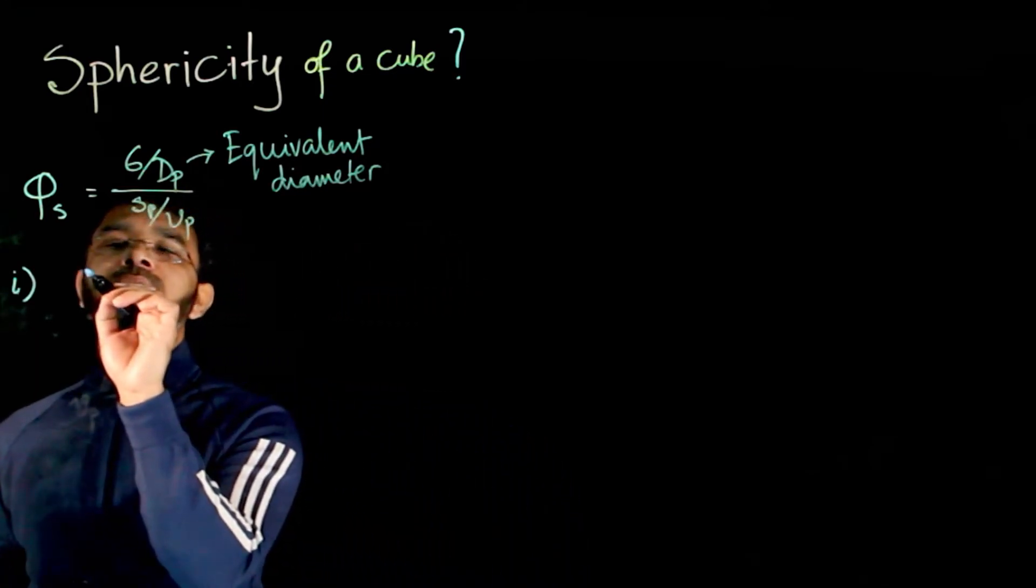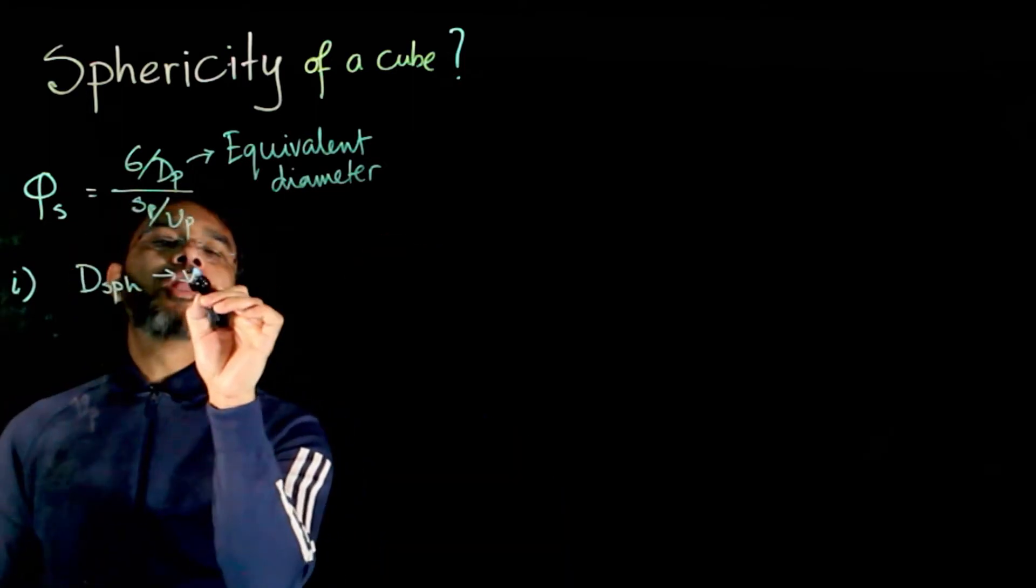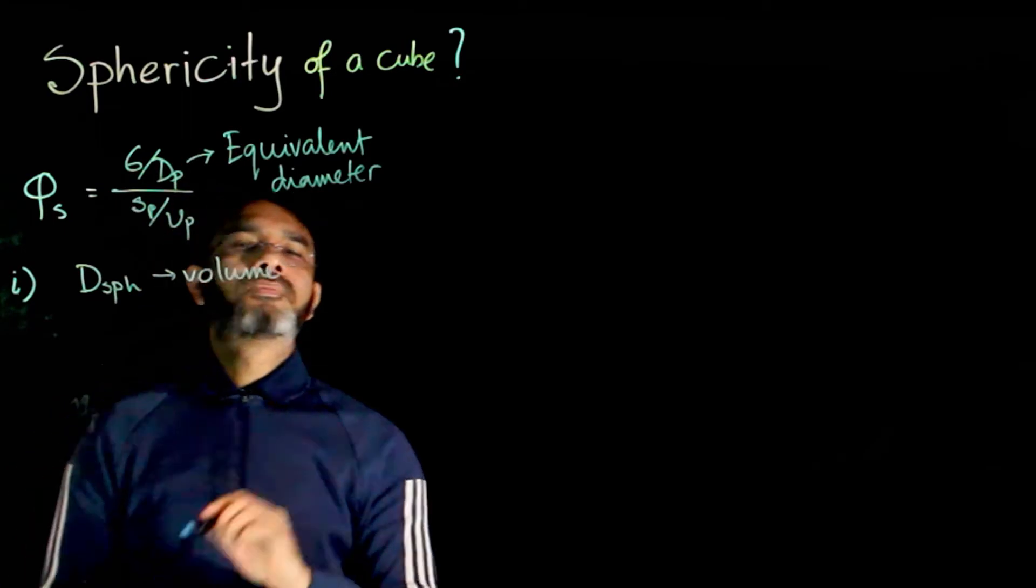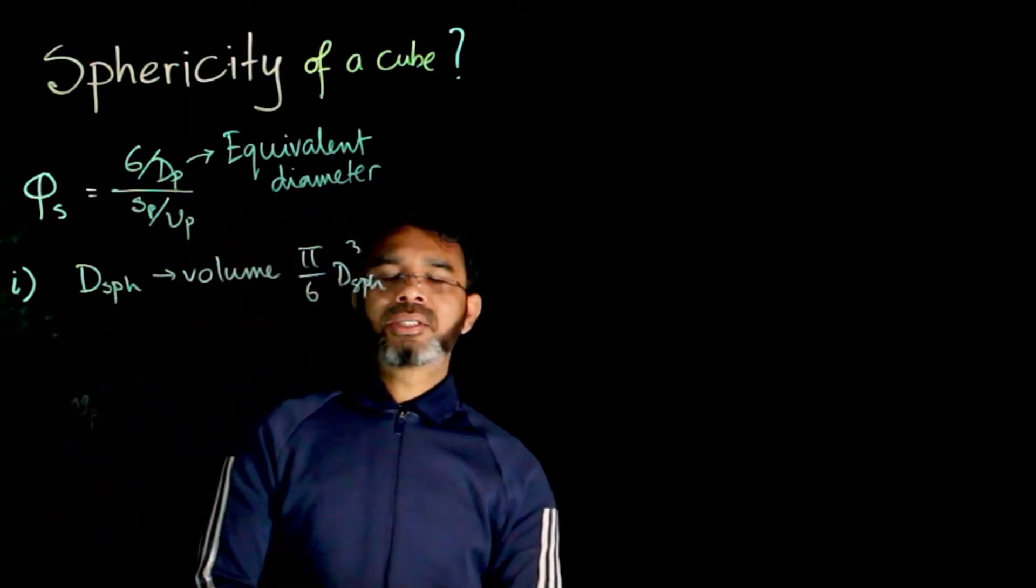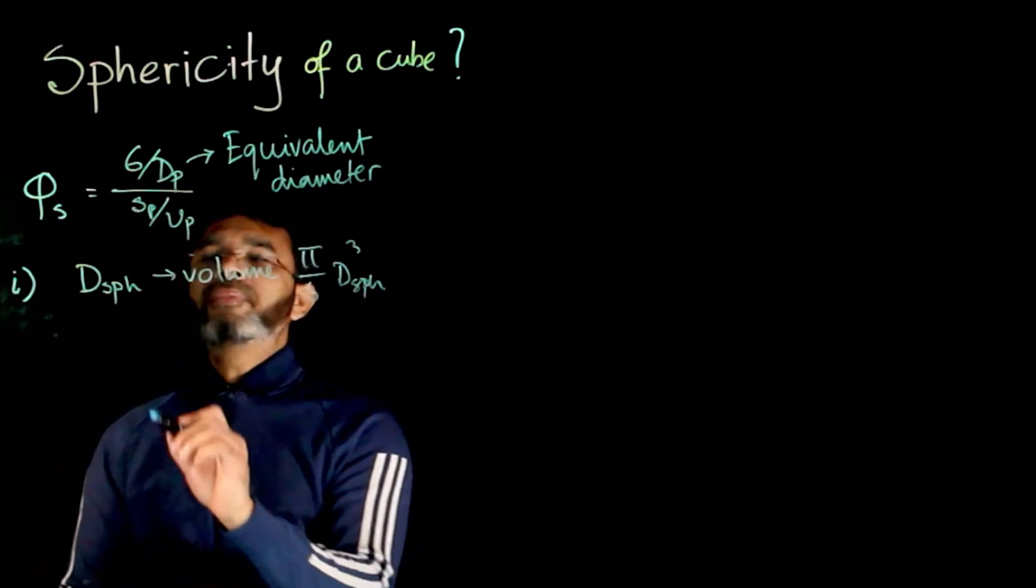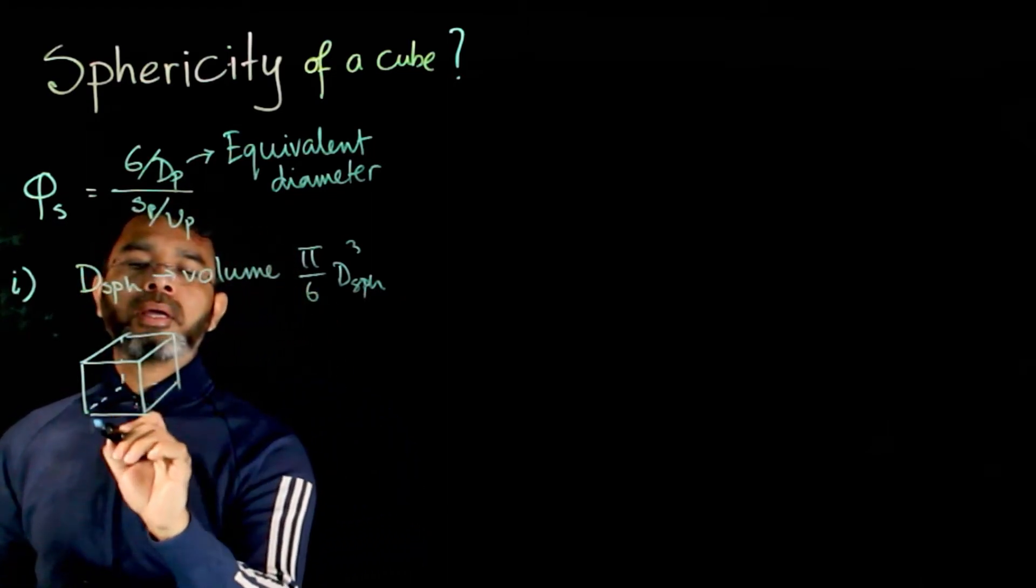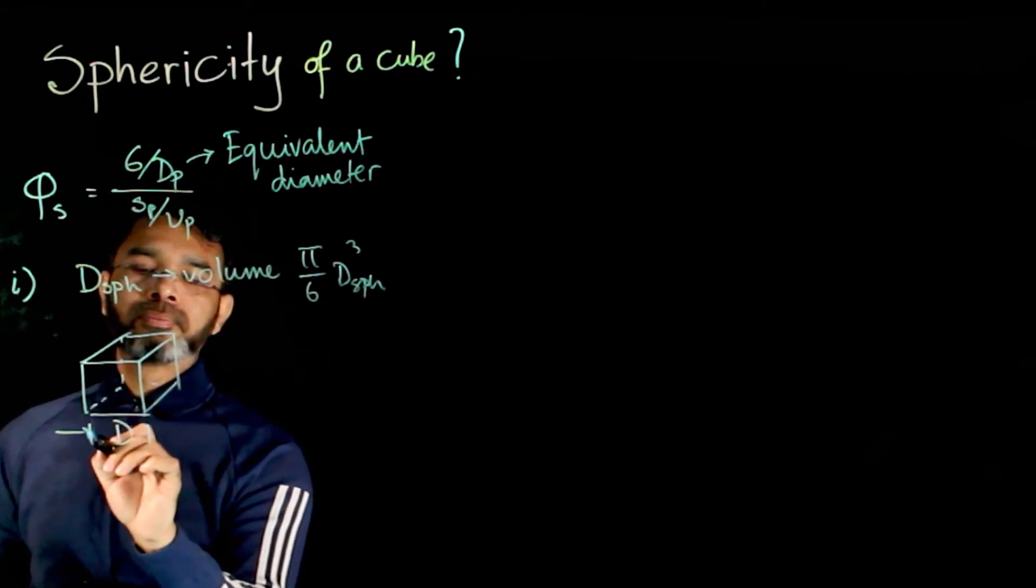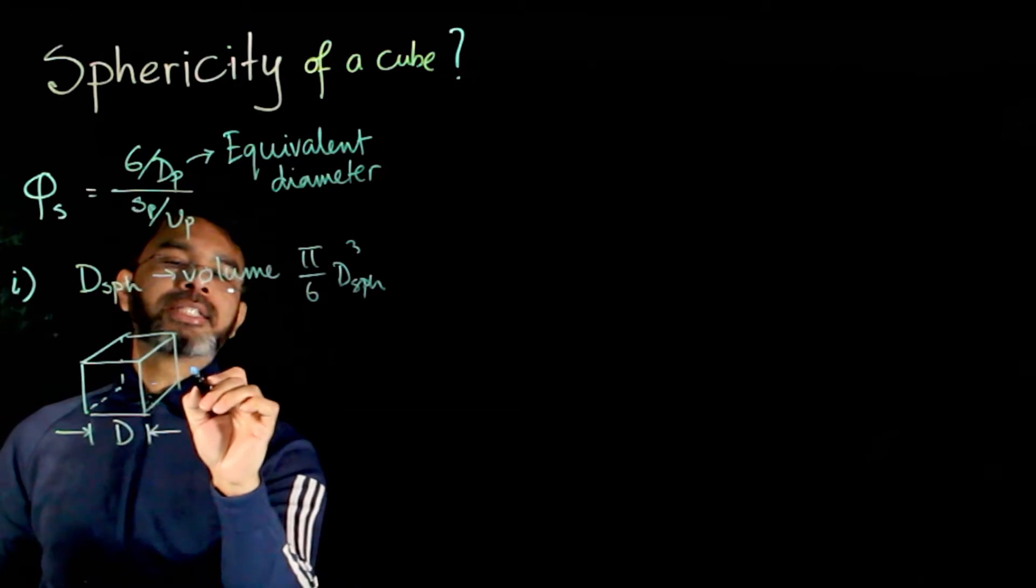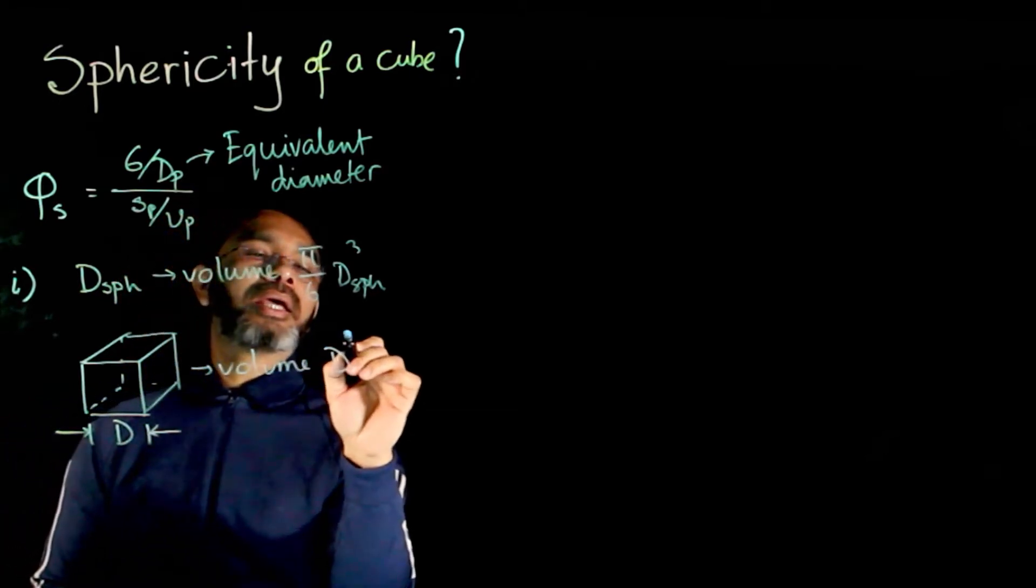If the diameter of the sphere is taken as dsph, then its volume is pi over 6 dsph cube. Now, if we have this cube having its one side to be d, then its volume is d cube.